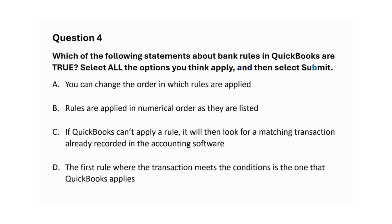Which of the following statements about bank rules in QuickBooks are true? Select all the options you think apply and then select Submit. A: You can change the order in which rules are applied. B: Rules are applied in numerical order as they are listed. C: If QuickBooks can't apply a rule, it will then look for a matching transaction already recorded in the accounting software. D: The first rule where the transaction meets the conditions is the one that QuickBooks applies. The correct answers are A, B, and D.